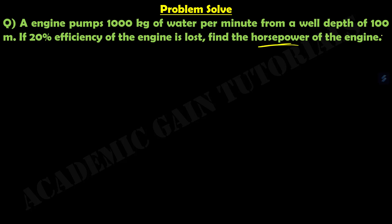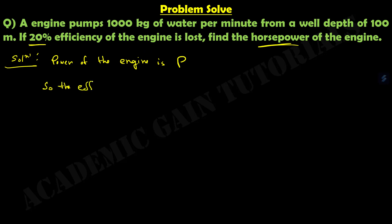Here, suppose the power of the engine is P. As it lost 20% of its efficiency, the effective efficiency is equal to 100 minus 20%, or 80%.